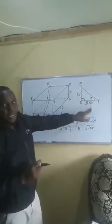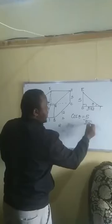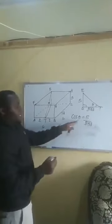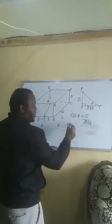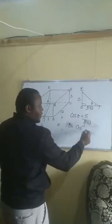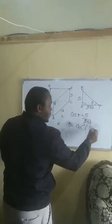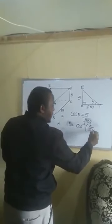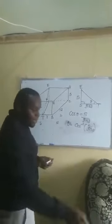So the cosine of theta equals 5 over √153. Therefore theta equals the inverse cosine of 5 over √153. We can calculate that using a calculator.